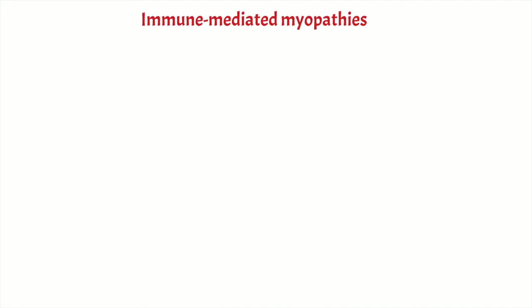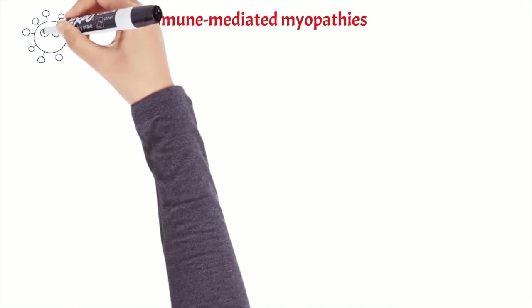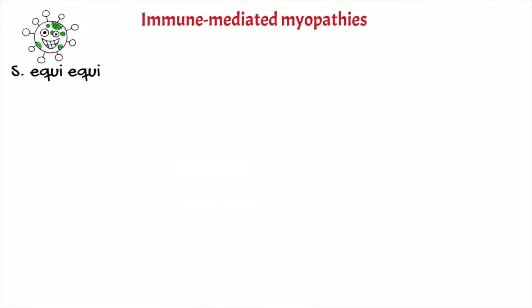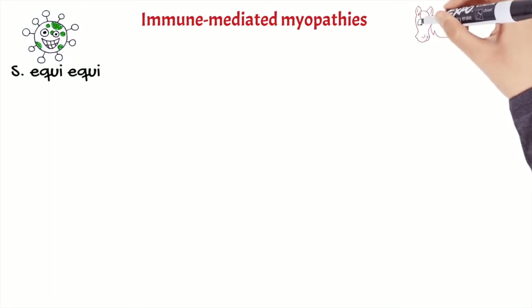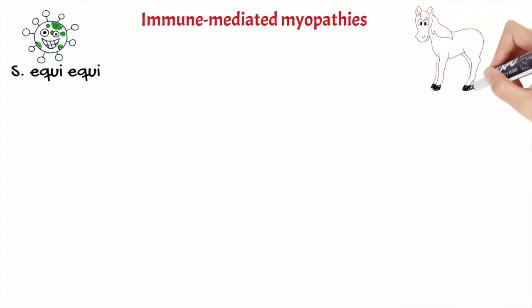Streptococcus equi, the responsible of strangles, is one of the principal causes of this type of myopathy. Other causes include viral respiratory diseases and salmonella. Warmblooded horses and similar breeds are more predisposed to develop this myopathy.